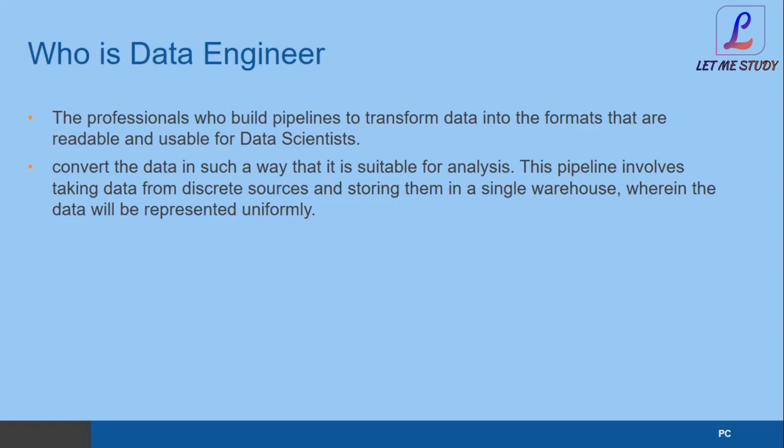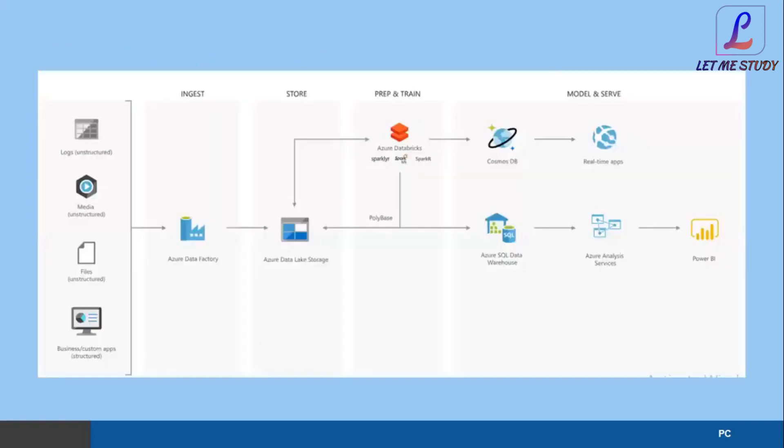The pipeline involves taking data from discrete sources and storing it in a single warehouse where data will be represented uniformly. Whatever the extraction and conversion is doing from end to end — that entire package is known as a pipeline. The data engineer develops this pipeline so that the data scientist will consume it and create research. At a high level, the data engineer will have four phases: ingest, store, prepare and train, and model and serve.